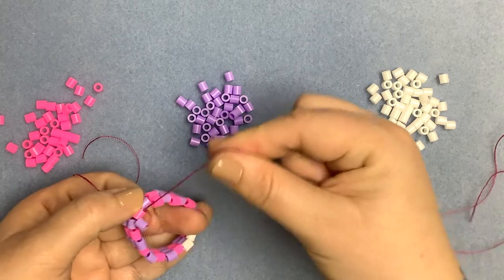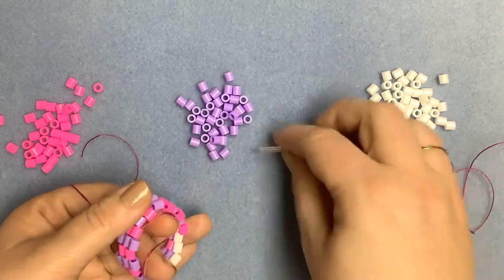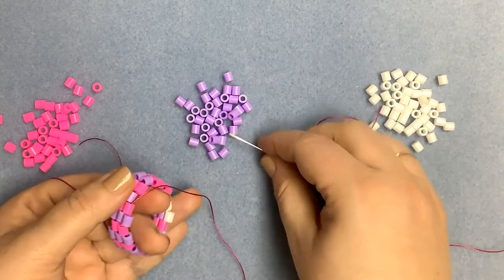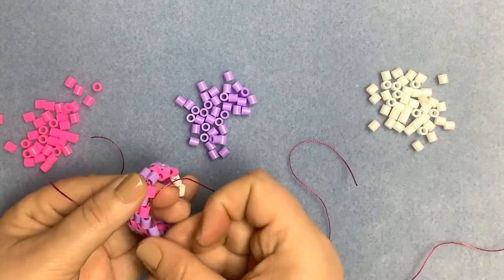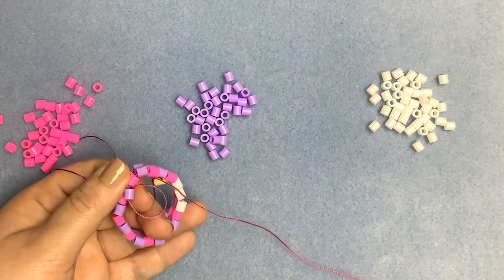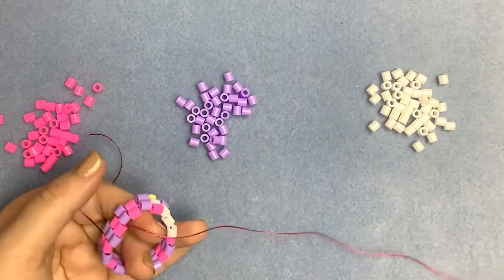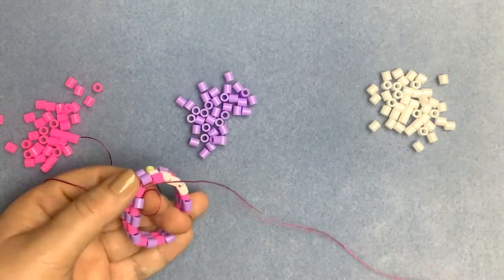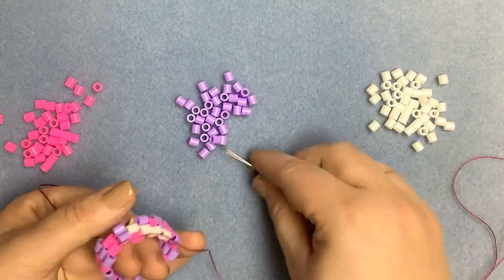So now I'm working clockwise around this tube, so I'm actually working in the opposite direction to the grid that I've shown you because this is the comfortable way for me to work around. If you need to work in an anti-clockwise direction, that's also fine. You're the boss of the beads, not the other way around.